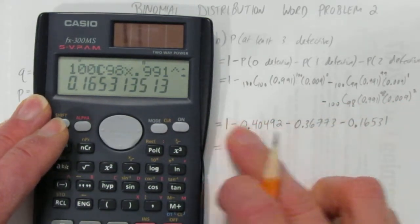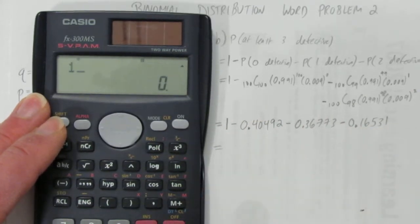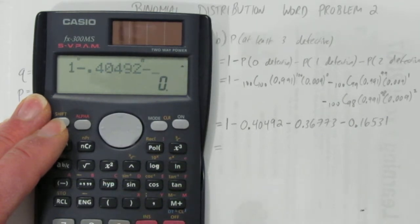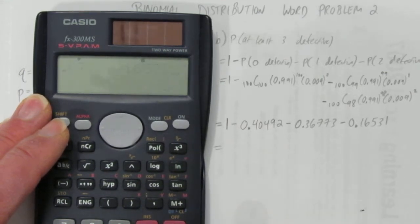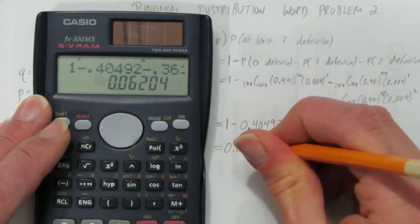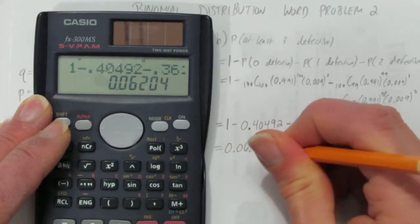And now we'll just do this final thing all at once. We'll do 1 take away 0.40492, take away 0.36773, take away 0.16531. And you get 0.06204.